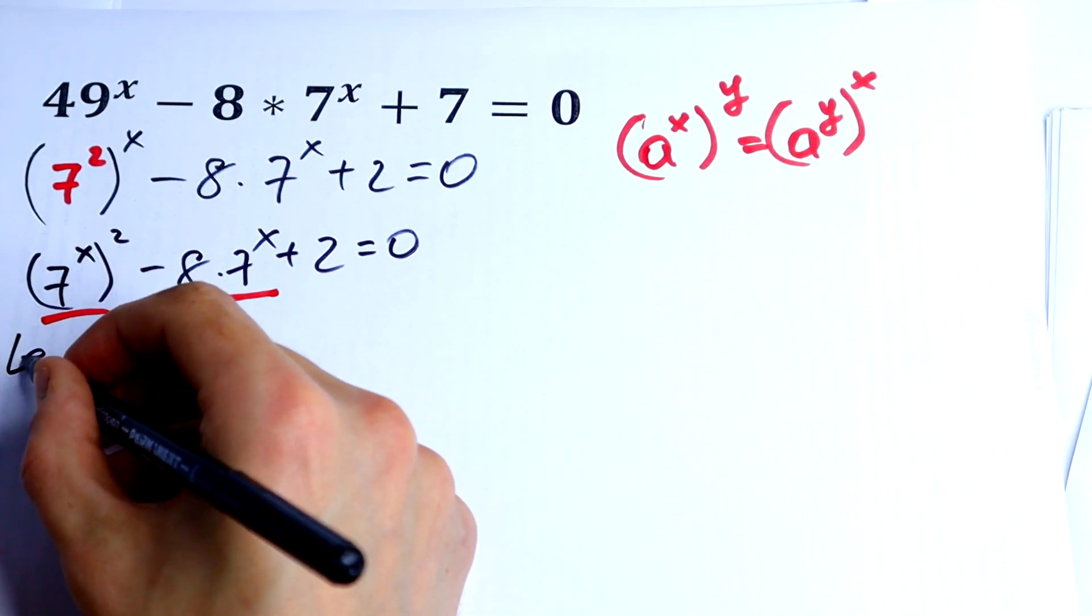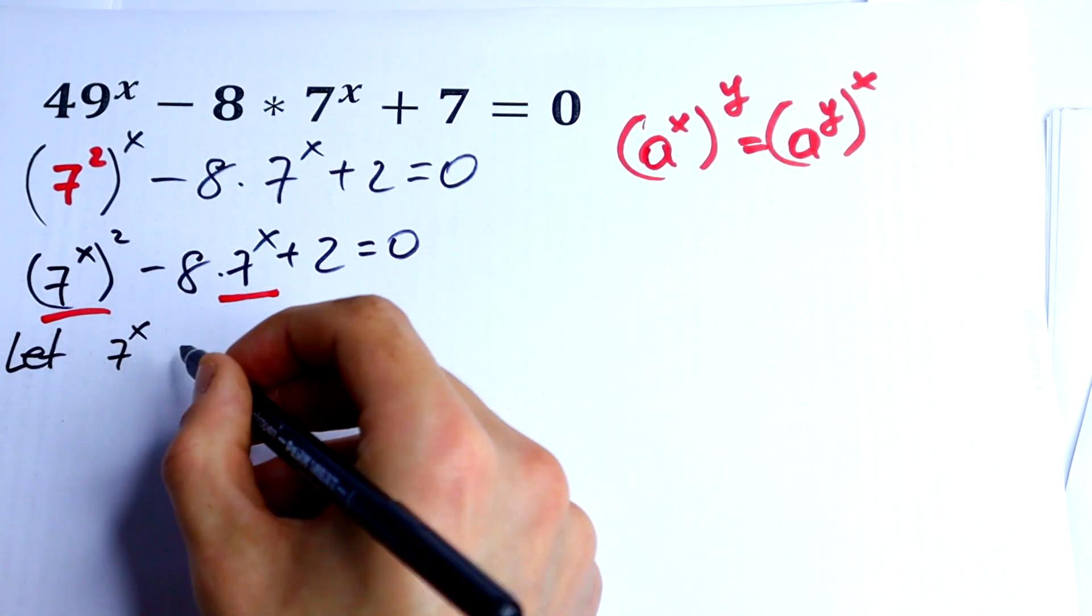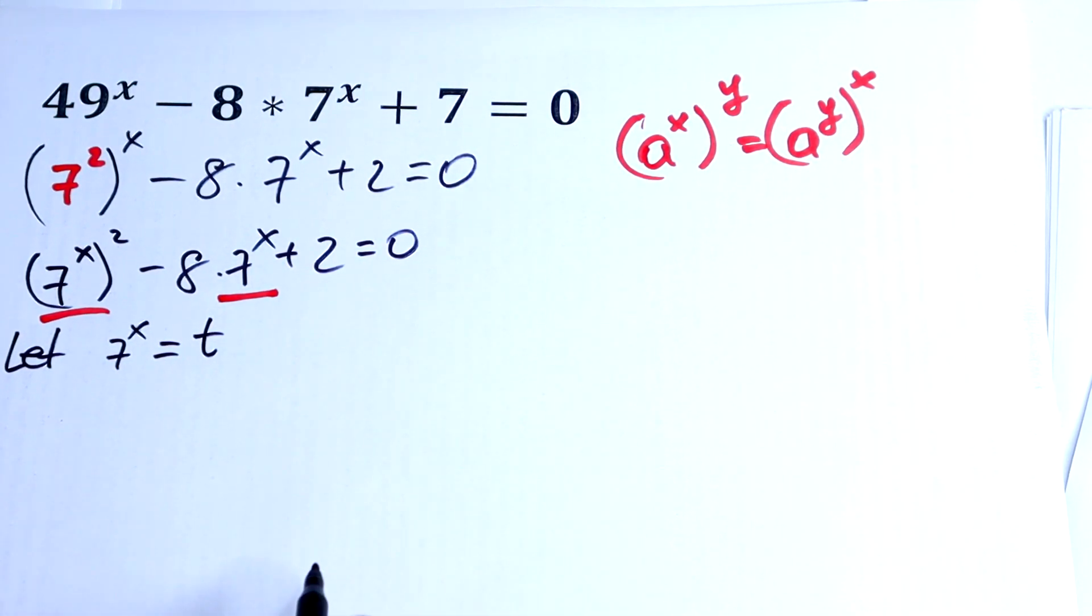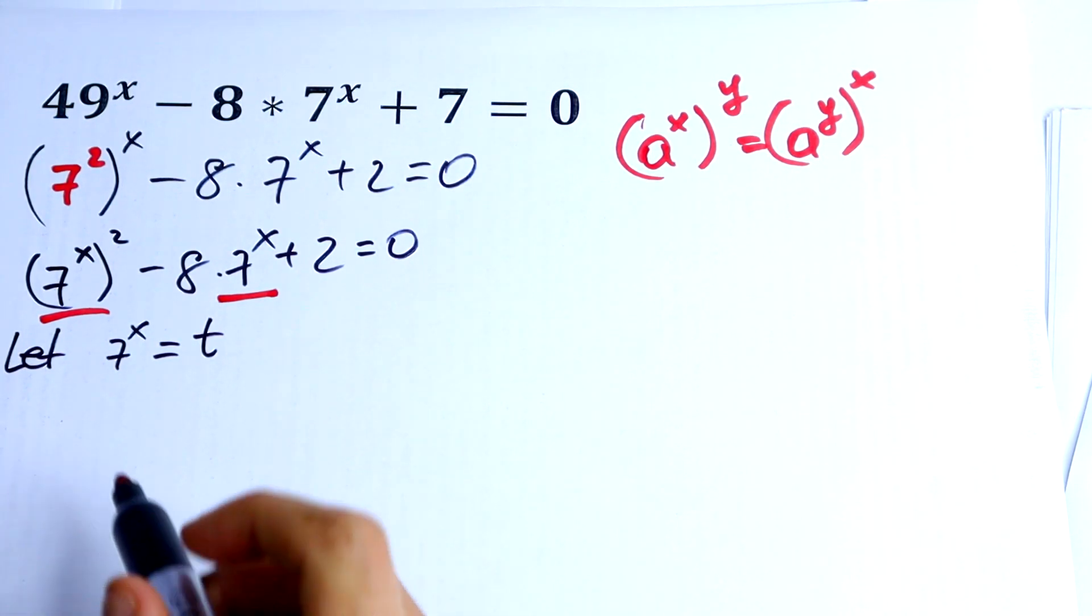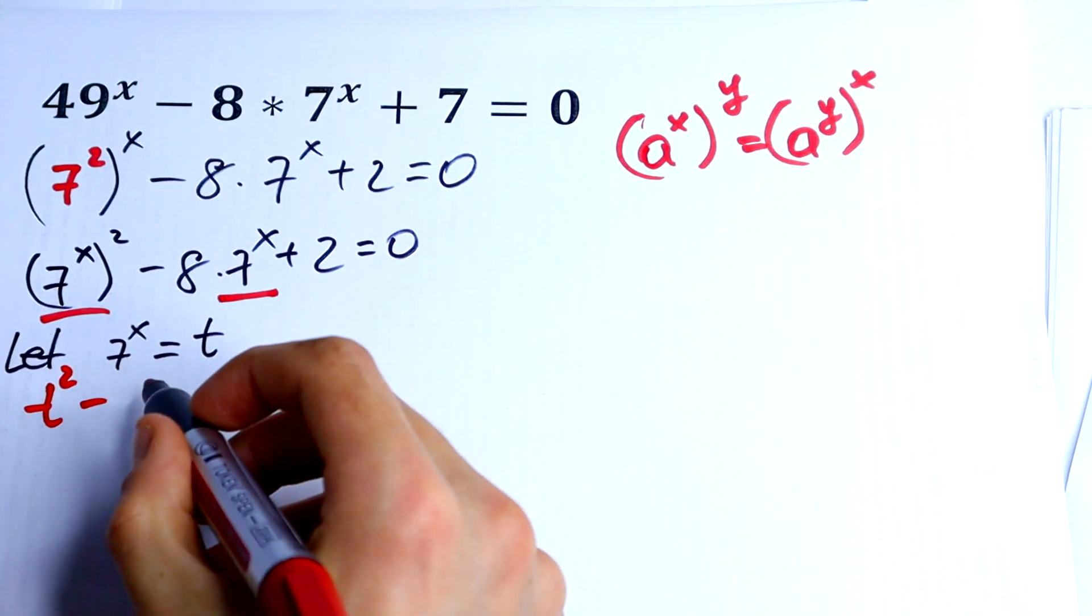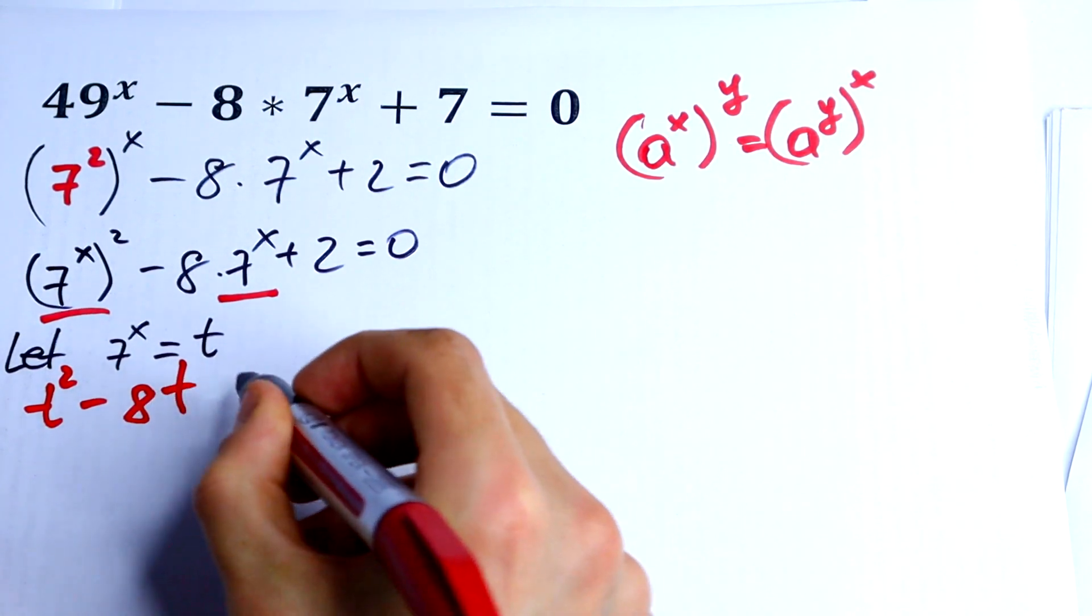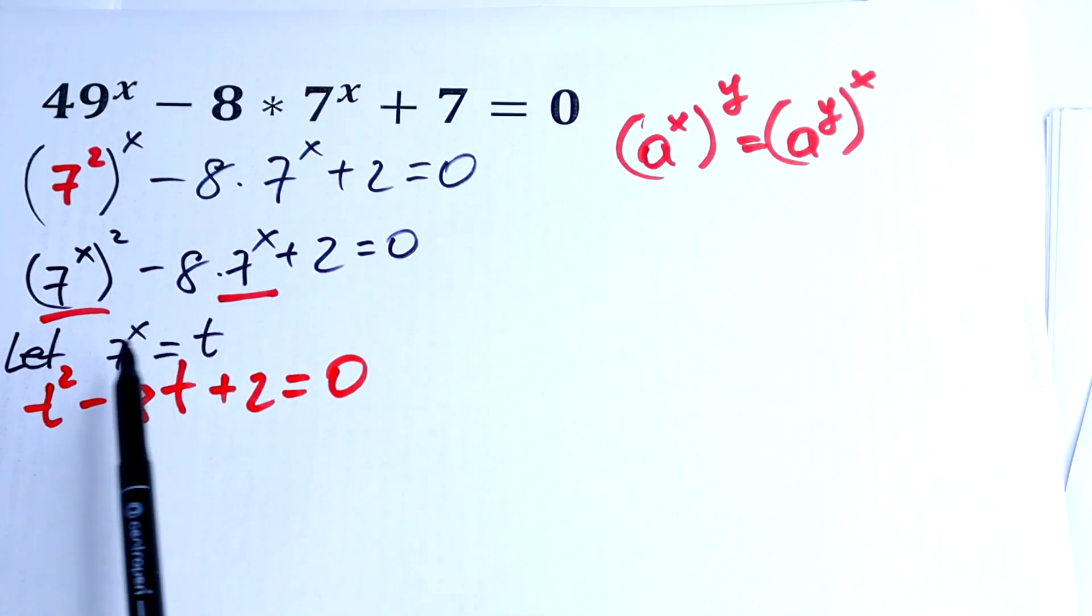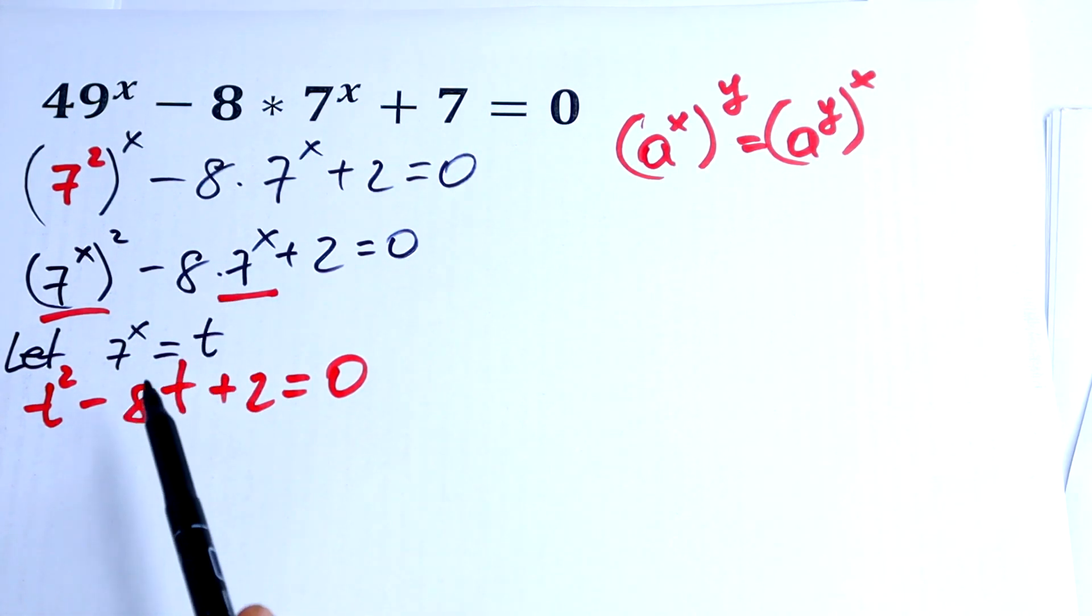Let our 7 to the power x equal to t. So we will have a quadratic equation: t squared minus 8t plus 2 equal to 0, just using our substitution where 7 to the power x equals t.